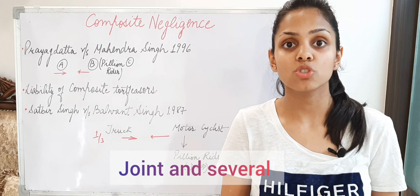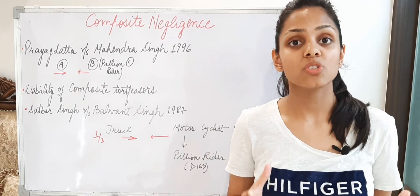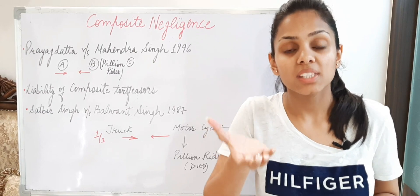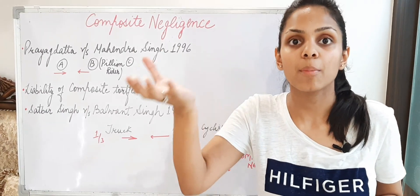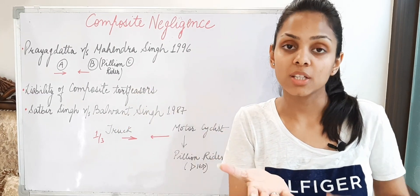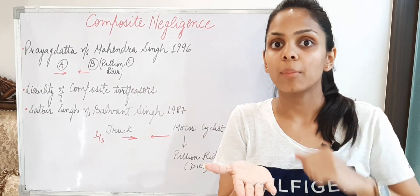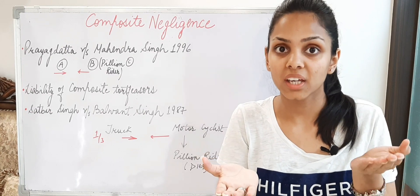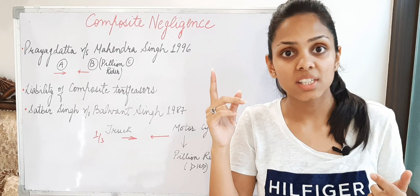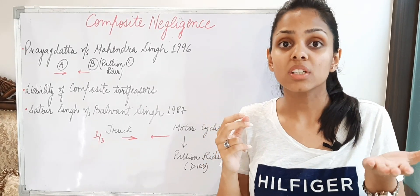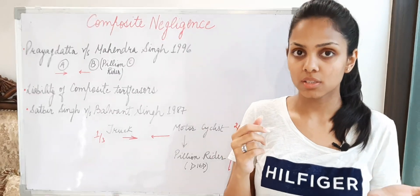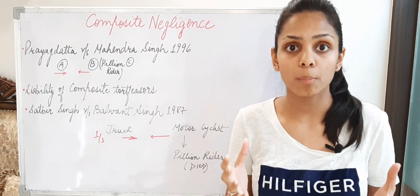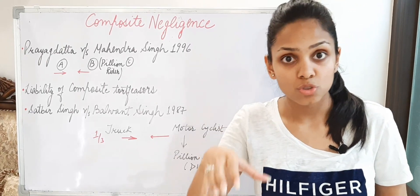So here their liability is joint and several. This has already been explained in my general defences video. Joint and several means: joint means the combined liability of both persons — because due to their negligent acts the resulting damage occurred to the plaintiff party — so the liability of both is established. Nobody will be exempted. But several means the plaintiff party can either sue defendant number one or defendant number two. In this case, C can either sue A or B. It is at the discretion of the plaintiff party — as they desire, they can file a case against anyone and claim compensation from anyone — the entire compensation.